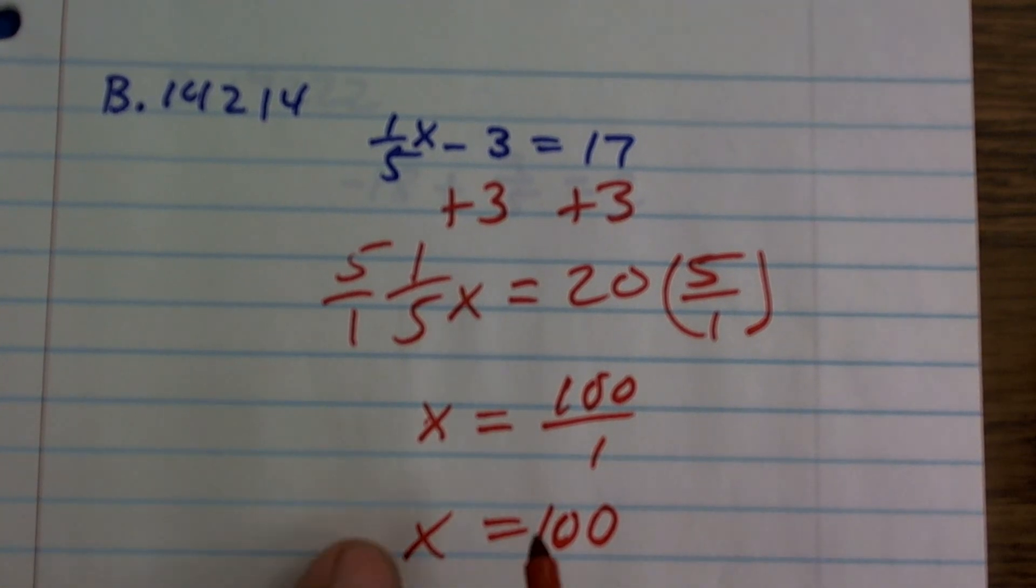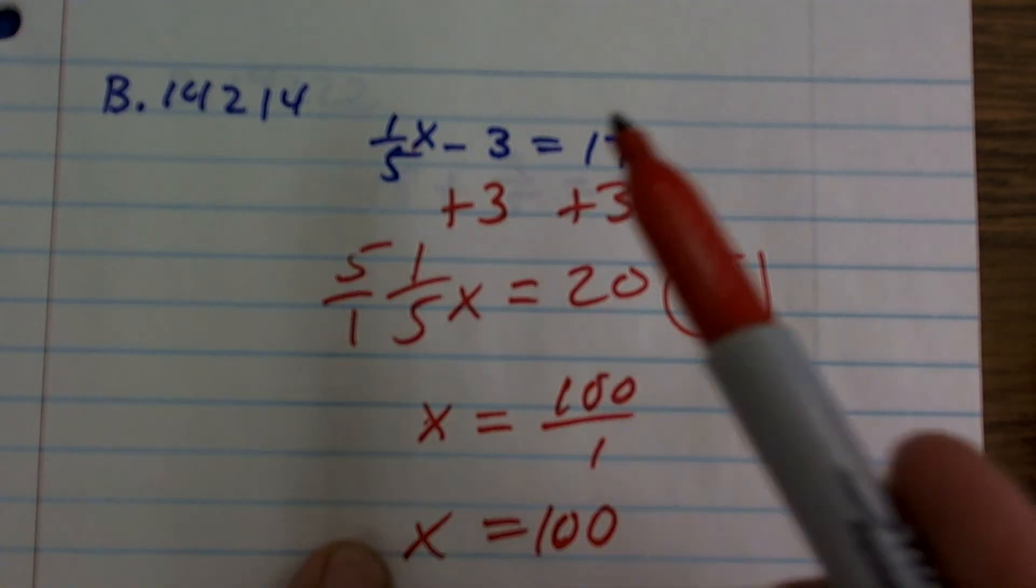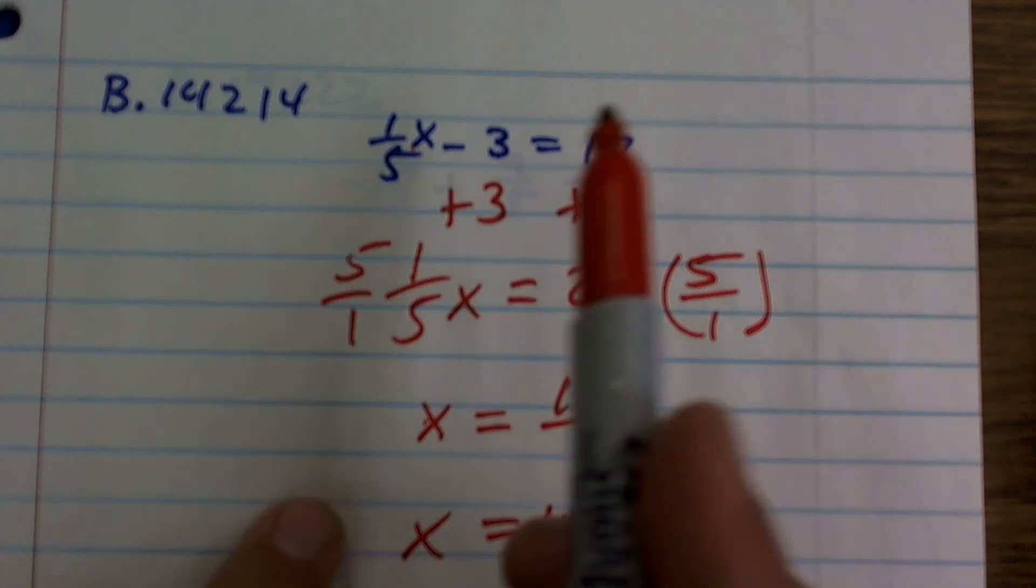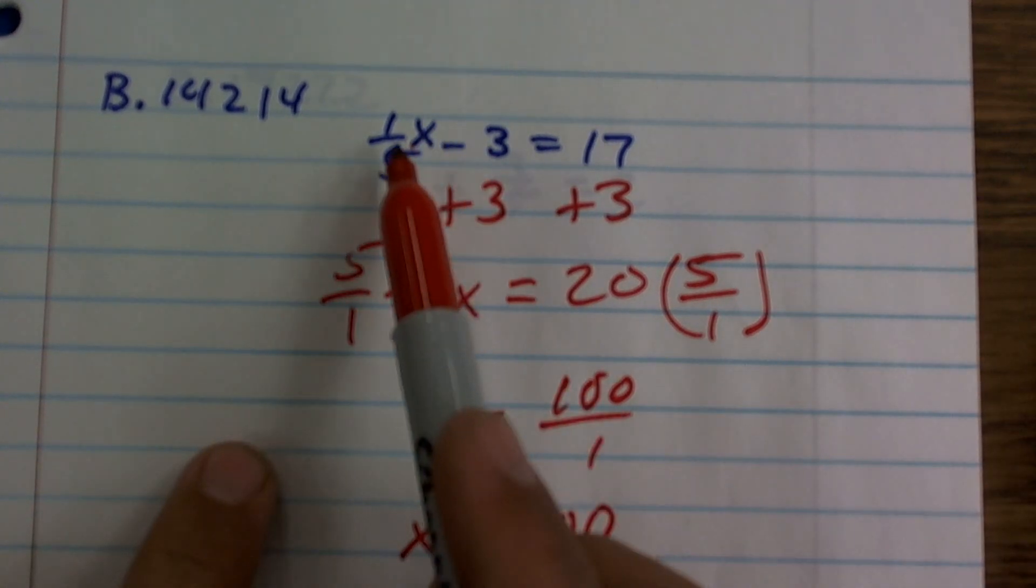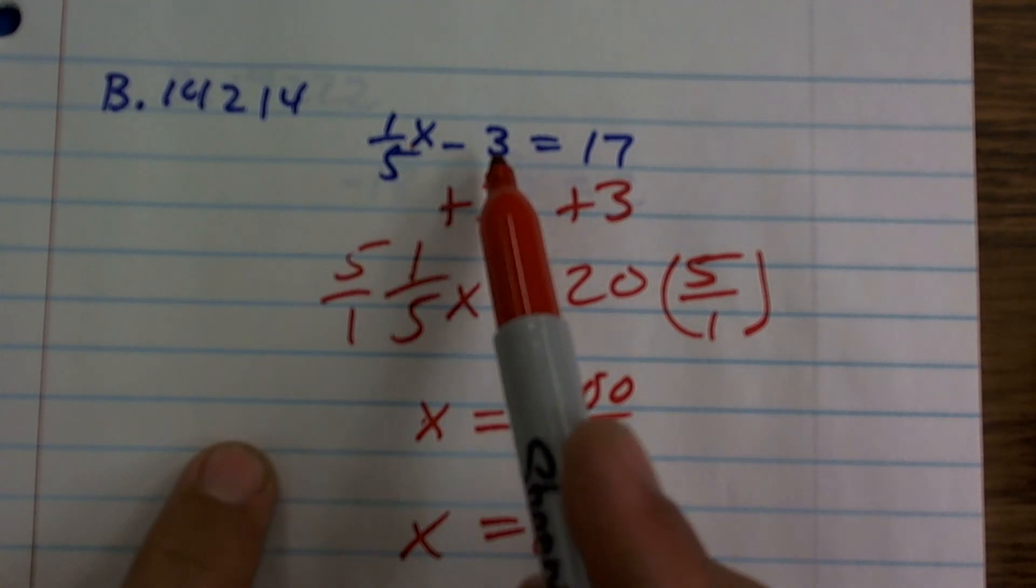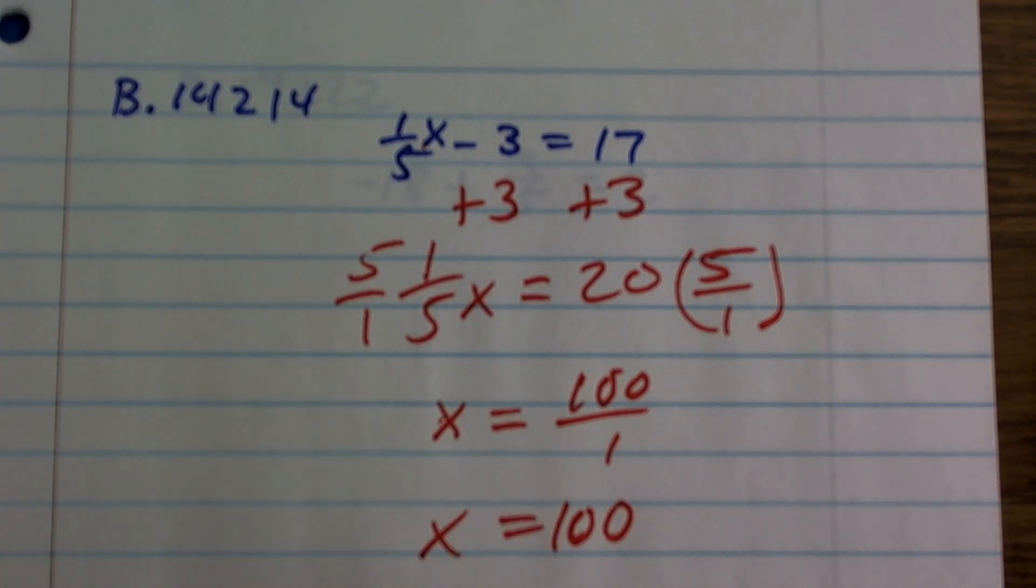And then we can check our answer. Make sure you plug in 100 for x. So 100 times one-fifth is 20. 20 minus 3 is 17. So 100 does make the equation true.